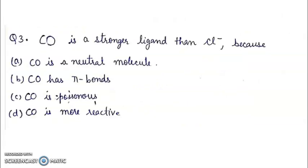Third, CO is a stronger ligand than Cl- because: CO is a neutral molecule, CO has pi bonds, CO is poisonous, or CO is more reactive. Right answer will be B. CO has pi bonds. And because of the back bonding, it is a stronger ligand. Synergic effect ki wajah se yeh zyada strong ligand hai.